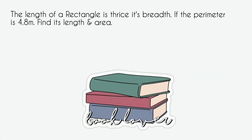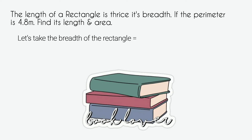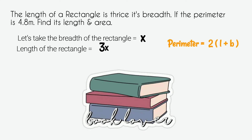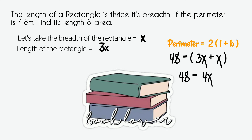The next question says: the length of a rectangle is thrice its breadth; if the perimeter is 4.8 meters, find its length and area. To solve this we need both the perimeter and area formulas. Since length and breadth are not given, we take breadth as x, so length becomes 3x. We apply the perimeter formula: 2(length + breadth) = 4.8, giving us 2(3x + x) = 4.8.